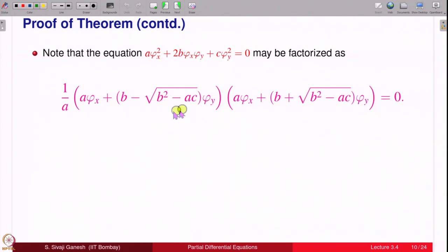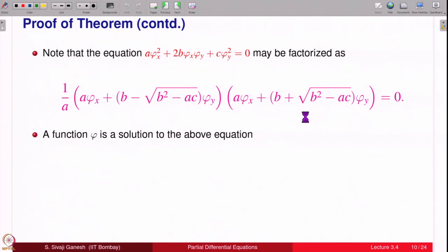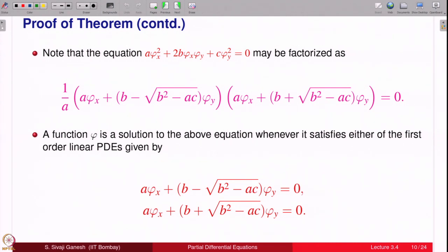We write this equation as a factored product — multiplying and dividing by A — and we have a license to do this because A ≠ 0 in a neighborhood of (x₀, y₀). A function φ is a solution to the above equation as long as it satisfies either one of the two factors, since if either factor is 0, the product is 0. These two factor equations are similar but not exactly the same: one has a minus sign and the other a plus sign, which is what helps us obtain φ and ψ.